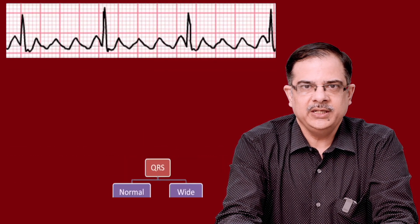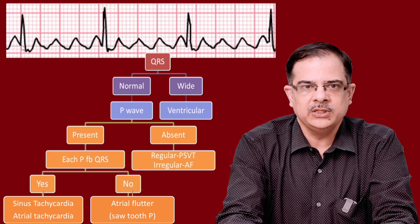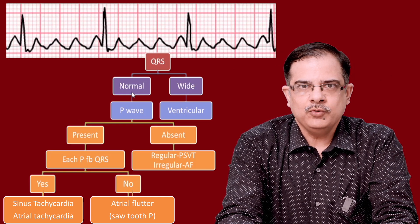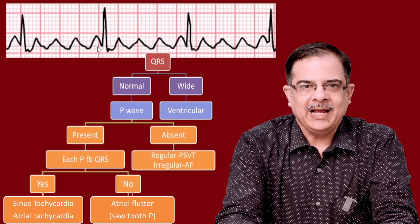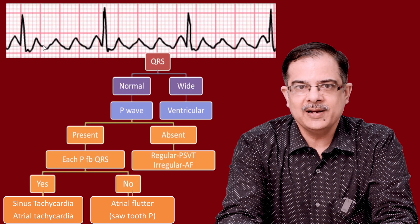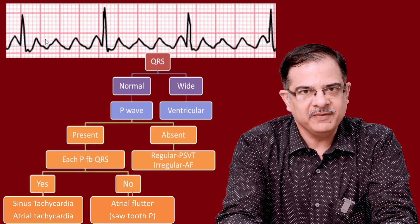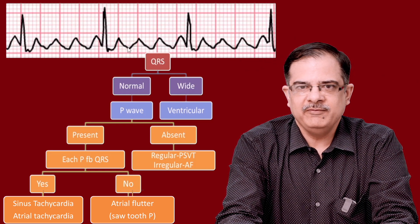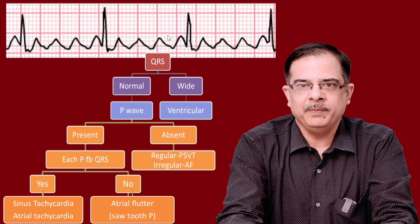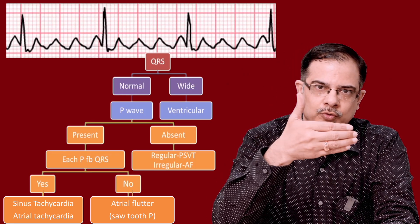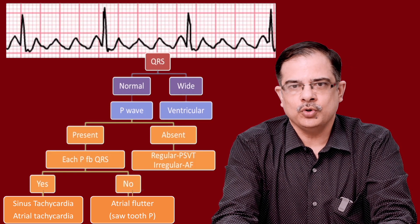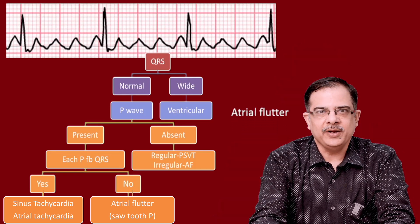Next ECG: QRS complex is normal in width. P waves are present. Is each P followed by QRS? No — each P is not followed by QRS, because the atrial rate is very fast and not all atrial impulses conduct to the ventricle — there is a fixed AV block occurring. The P wave pattern shows a sawtooth appearance, typical of atrial flutter. Therefore the diagnosis is atrial flutter.